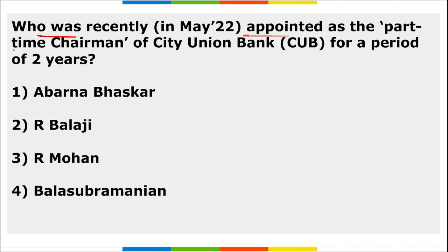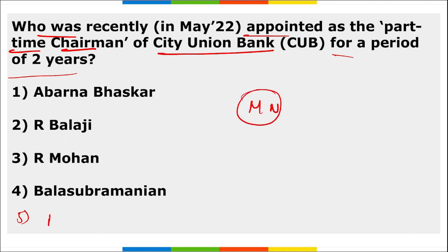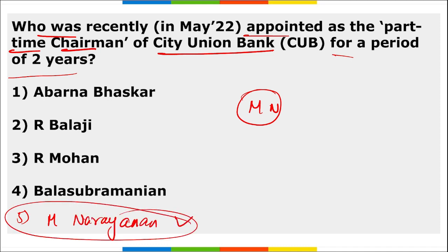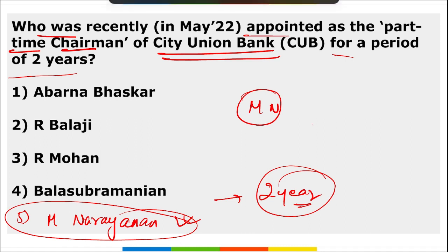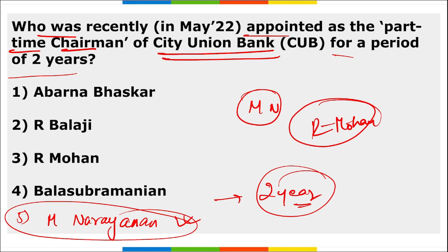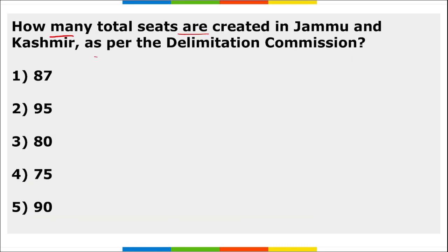M. Narayanan has been appointed as the part-time Chairman of City Union Bank for a period of two years, succeeding R. Mohan. As per the Delimitation Commission, the total seats created in Jammu and Kashmir are 90.